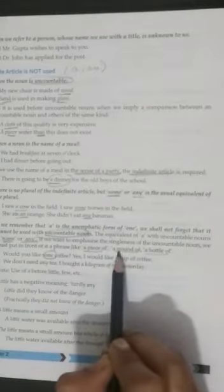If we want to emphasize the singleness of the uncountable noun, we must put in front of it a phrase like a piece of, a pound of, a bottle of. Would you like some coffee? Yes, I would like a cup of tea. Here we have used article. I hope now it is clear to all of you. We don't need any tea. I bought a kilogram of tea yesterday.